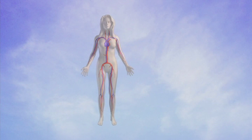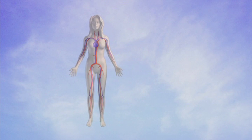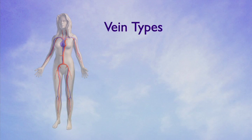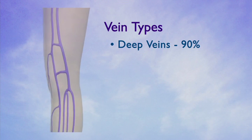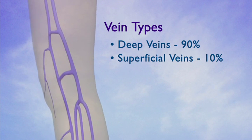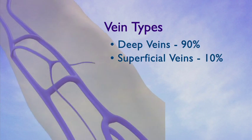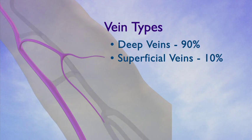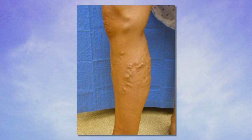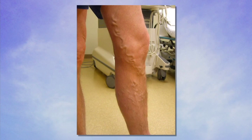Veins are responsible for the return of blood from the extremities back to the heart. There are two basic types of veins in our legs. The deep veins, which run next to muscles, carry 90% of all blood return from the legs to the heart. The superficial veins return the remaining 10% of blood from the leg, and are often visible, especially when diseased.